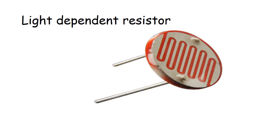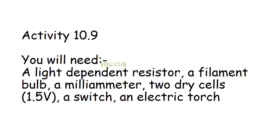The next type is the light-dependent resistor (LDR). There are resistors that change their resistance when the intensity of light falling on them changes — such resistors are known as light-dependent resistors, or LDRs. For the activity using an LDR, you will need a light-dependent resistor, a filament bulb, a milliammeter, two dry cells, a switch, and an electric torch.